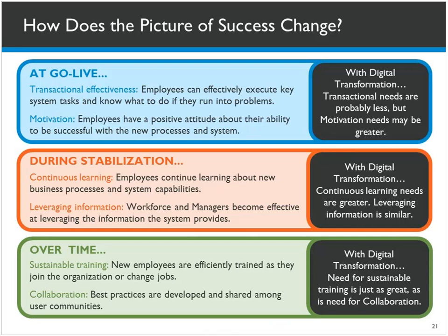This slide GP Strategies has used for some time to talk about what success looks like. On the colored part on the left are more traditional initiatives you may have supported in the past — at go live, during stabilization, and over time. On the right, in the black squares, we compare and contrast that with the digital transformation success picture. Users' transactional needs may be less than they were in the past, but their motivation may be greater. Motivation and engagement increases when people understand what their piece of the process is and when stories and scenarios are relevant to them. The more you add relevance and increase their motivation, the more you'll encourage successful adoption.